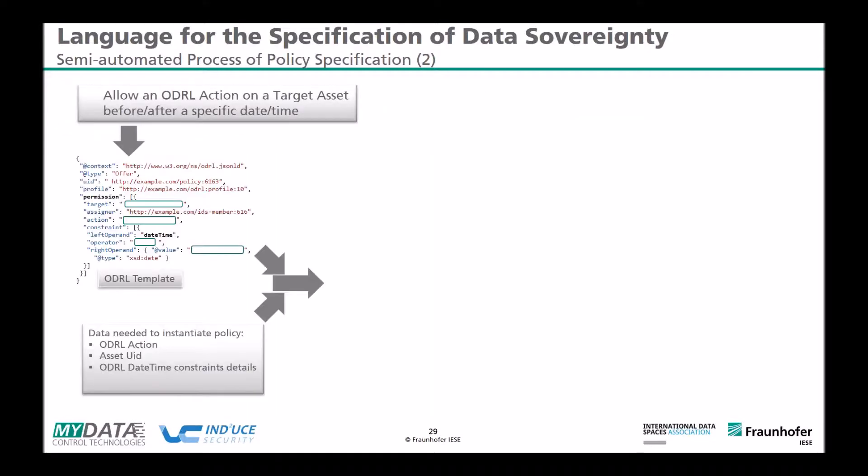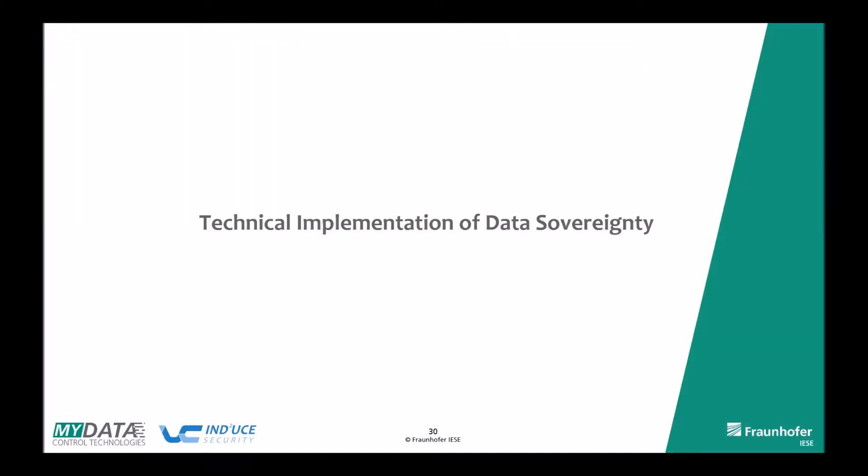Here is an example of an ODRL policy. ODRL provides a flexible information model for representing statements about the usage of content and services. In the example, an ODRL offer policy allows an action of reading a target asset until a certain time. You can specify constraints with Boolean and logical operations, and target assets are identified via URIs. We also provide an editor to create these policies more easily. The template approach requires filling in the action — for example 'read' — an asset ID, and time/date constraints to produce a valid ODRL policy.